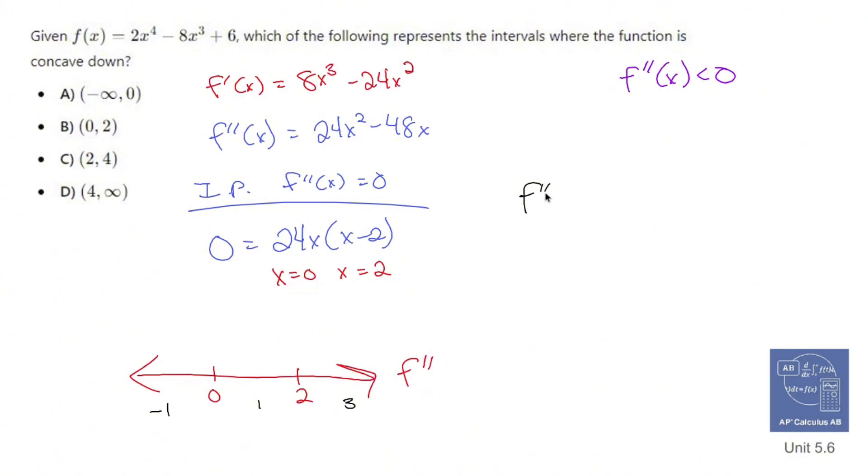So f double prime of negative 1, if I use this guy right here, which seems to be a little bit easier, I'm going to use that. So that is still f double prime. I'm going to get 24 times negative 1, so negative 24. I'm going to get negative 1 minus 2, which is negative 3. And I don't care what number I get. I just know that this is positive. So you're going to be positive right here. So not at all what I want.